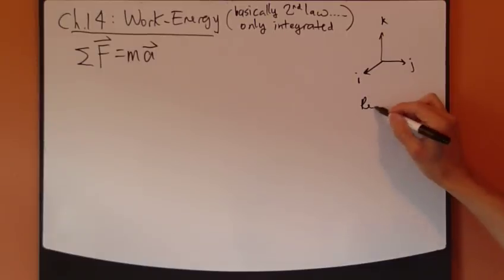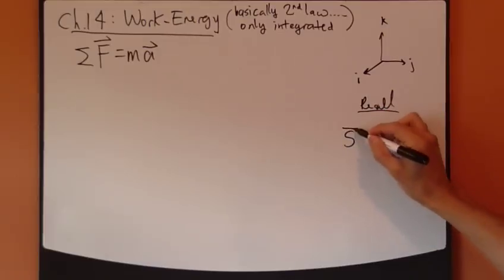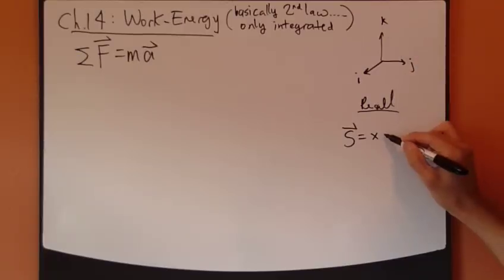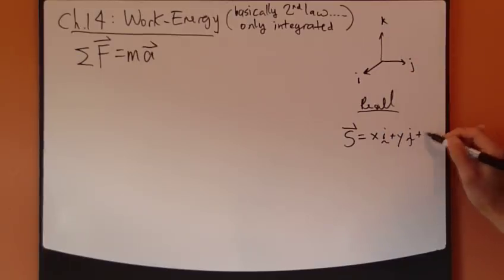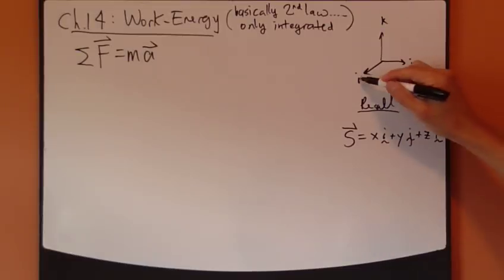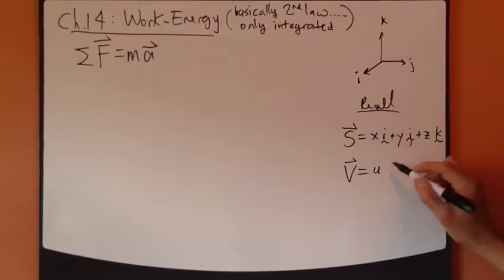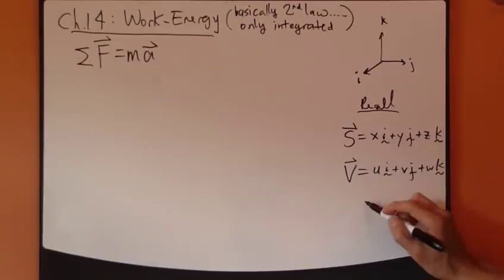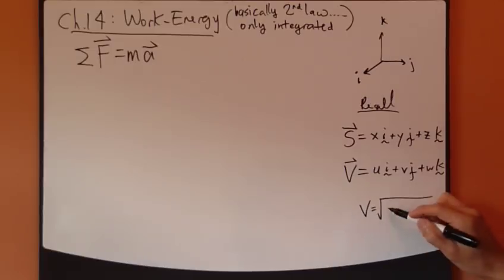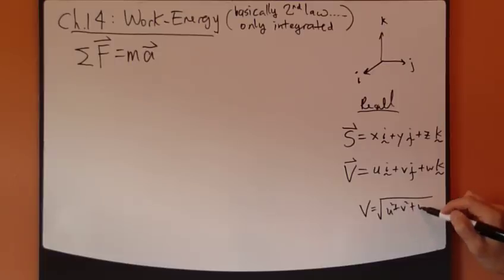Now, recall that this position vector can be expressed in terms of the i, j, and k direction as x, y, and z. So x, y, and z are the three components of position. And then velocity v is expressed as u, v, and w. So the magnitude of velocity then equals u squared plus v squared plus w squared.